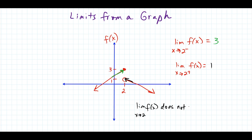What I like to look for when identifying limits from a graph is a jump in the graph, and that automatically tells me the limit is not going to exist. One of the big ideas is that when the left side and right side limits are equal, the limit in general is equal. Otherwise, when the left and right side limits are not equal, we say the limit doesn't exist.